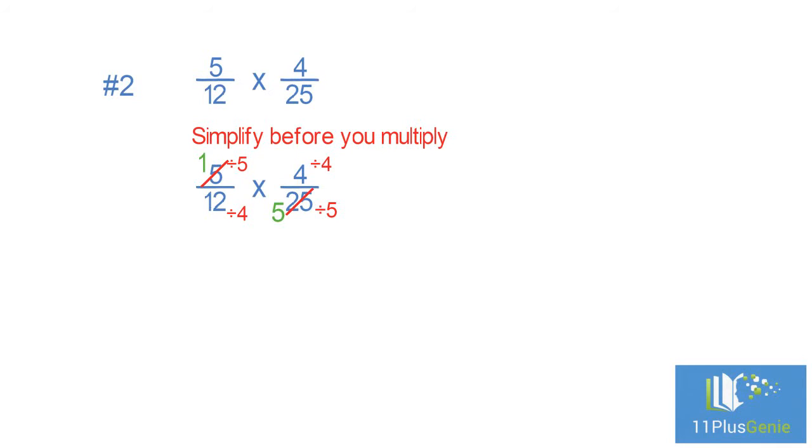Four can go into four and twelve, simplify again: fours into four is one, and fours into twelve is three. We now have one third times one fifth, which gives us one times one is one, and three times five is fifteen. Five twelfths times four twenty-fifths equals one fifteenth.